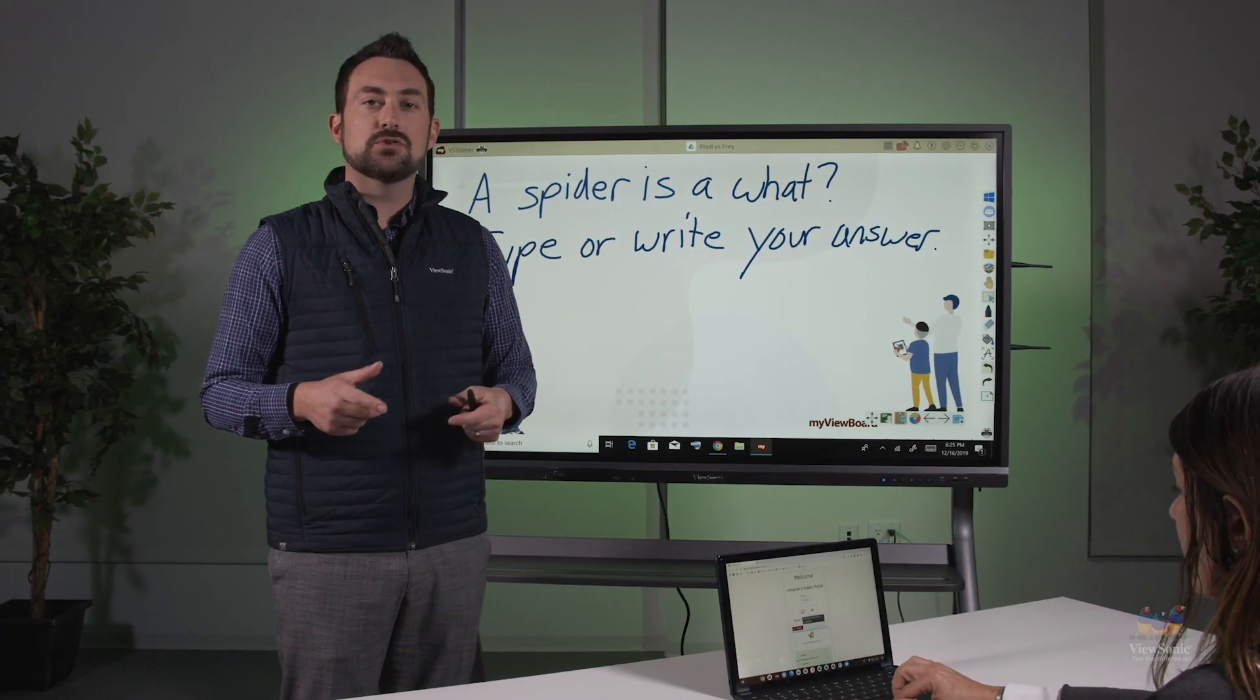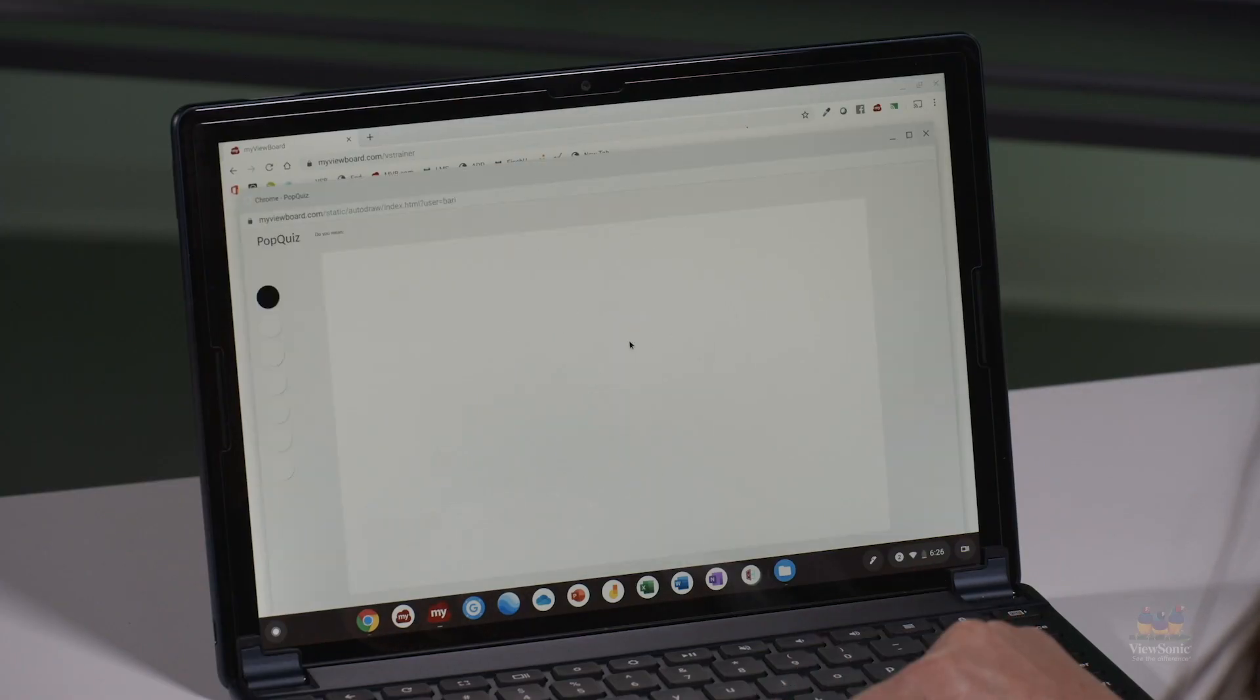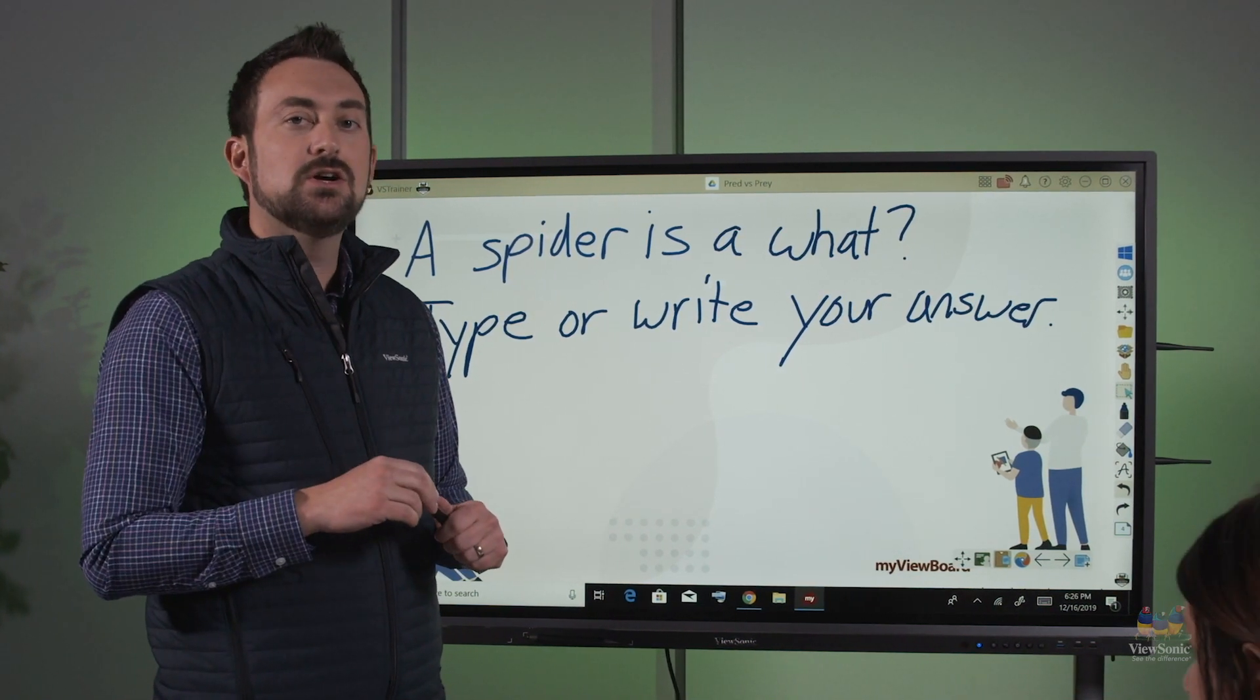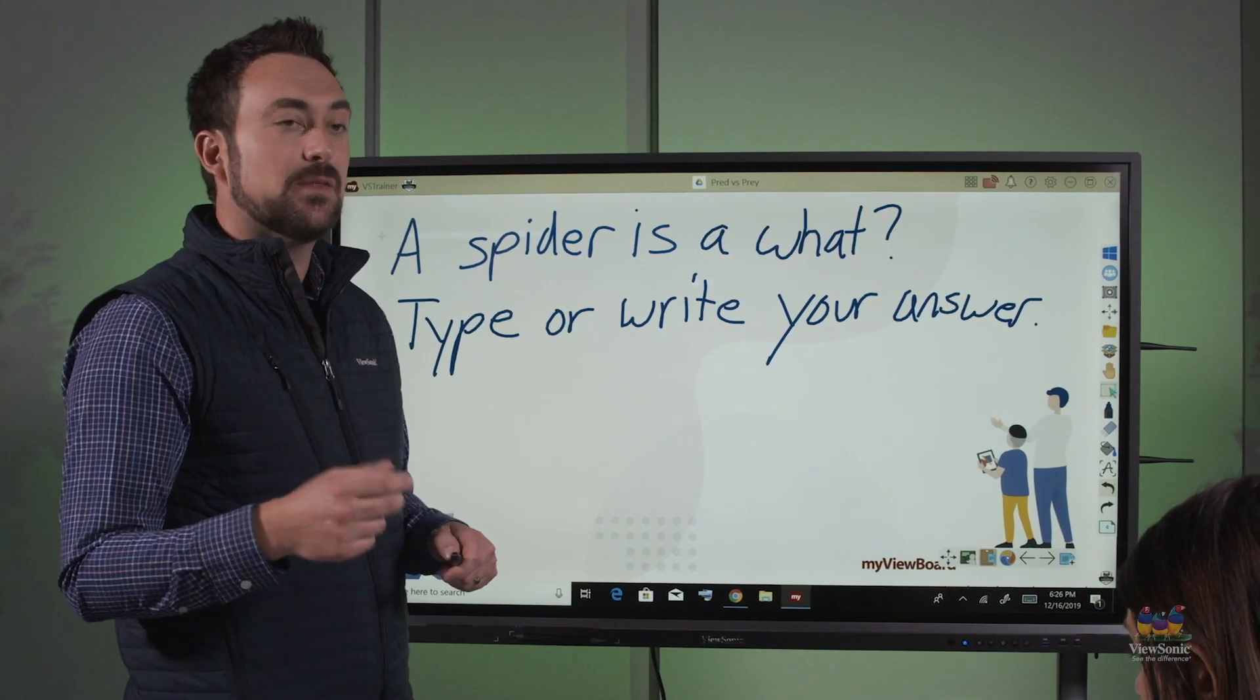It's going to open a new screen which is a blank canvas. Here they can draw or type on the canvas. When they're ready, they'll click the throw icon to throw their answer to the panel. When the answer is thrown, you can hear it with a little ding in the background.